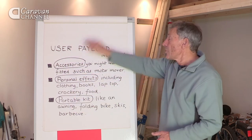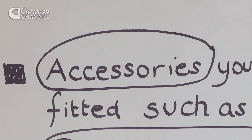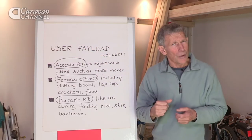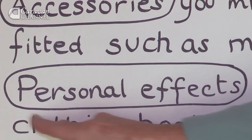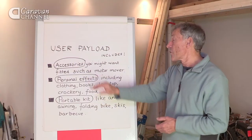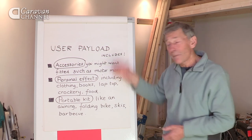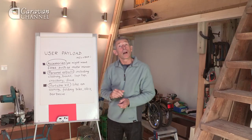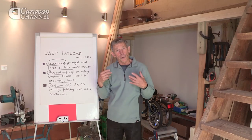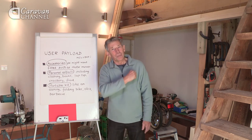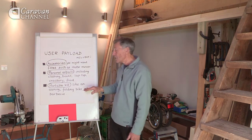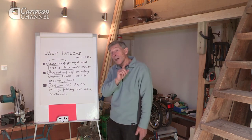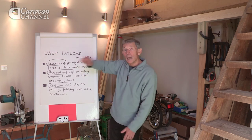That 164 kg can be divided up into three areas. User payload covers: first, accessories — things like a solar panel or a motor mover, some of which are pretty heavy; second, personal effects including your clothing, books, crockery, food, and laptop; and third, portable kit — like an awning, a folding bicycle in summer, a barbecue, or even skis in winter.